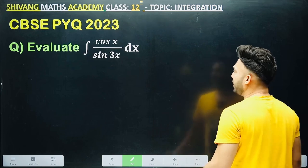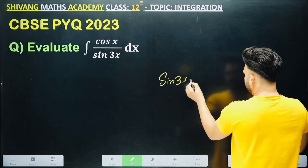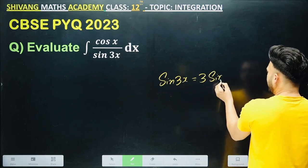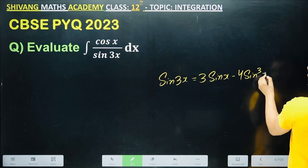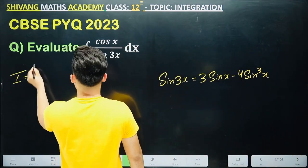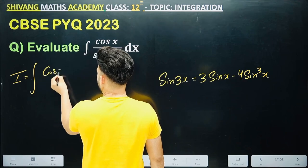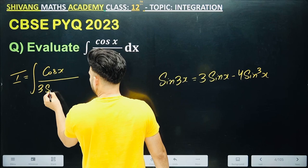So what to do to integrate it? The formula of sin 3x is 3 sin x minus 4 sin cubed x. You will write this in its place. It will become cos x over 3 sin x minus 4 sin cubed x. Now what to do?